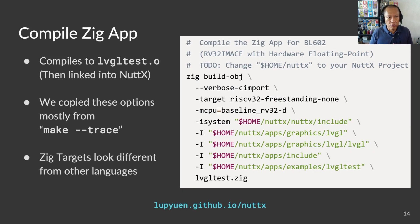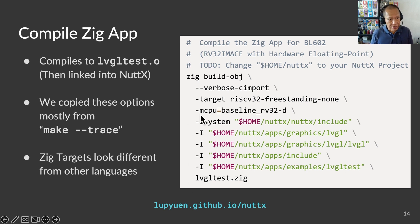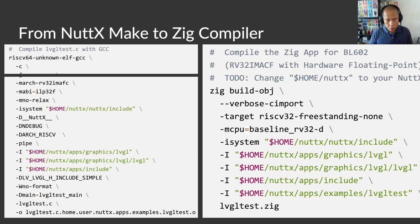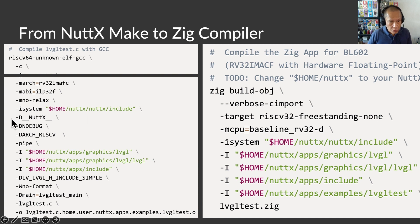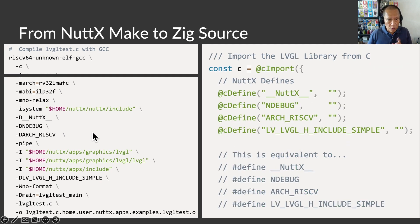To compile our Zig code for the RISC-V BL604 SOC, we run this command. Then we link the object file with NuttX. How did we get these compiler options? We copied them from NuttX as observed with a make trace. Here are the options that we copied from GCC to the Zig compiler. Now what about the rest of the GCC options — like NuttX, n-debug, arch RISC-V? We copied these C macros to our Zig program as @cDefine, since the Zig compiler won't accept these options.